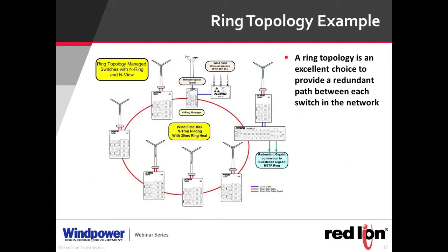Ring topology, while sometimes not used in the turbine itself, is an excellent choice to provide redundant paths between each switch in the network. In a linear topology, if a segment is broken, data stops reaching all other devices. By installing a ring, the ring manager blocks one communication port and data goes around to the other devices. The manager sends a health check packet to ensure the ring is intact, and upon detecting a break, it heals the segment and changes the path so data continues to flow.